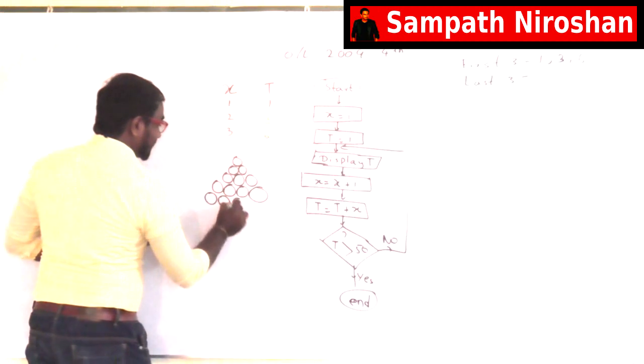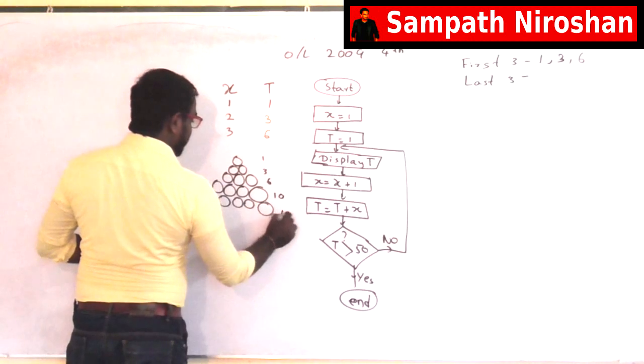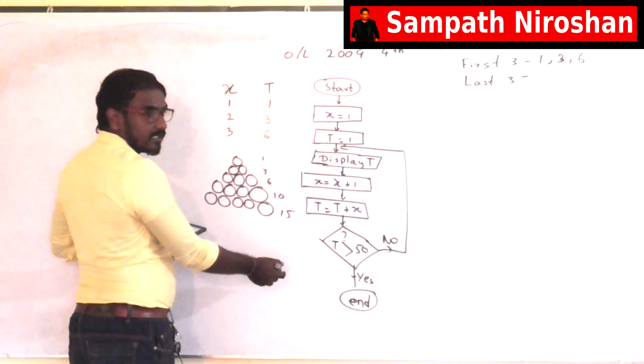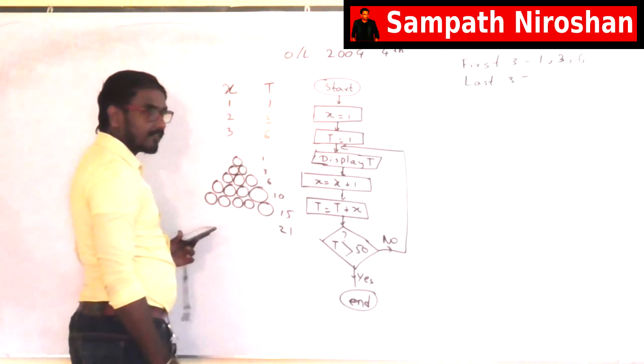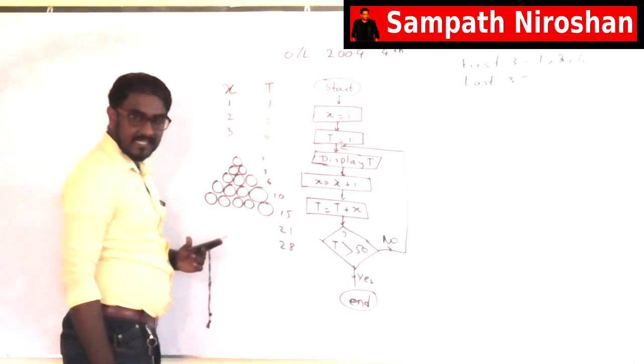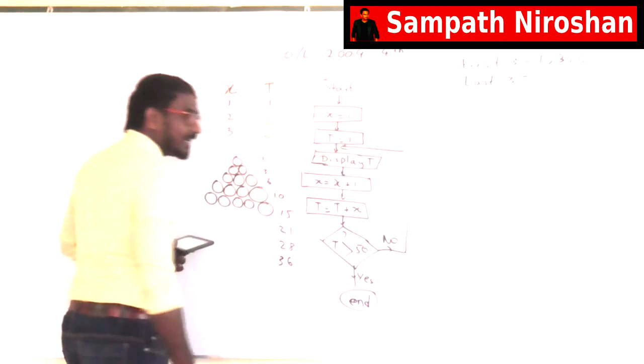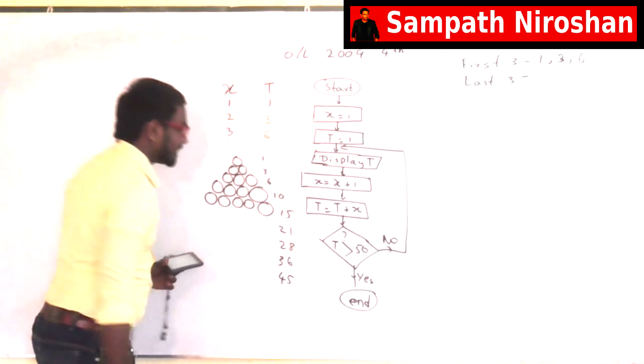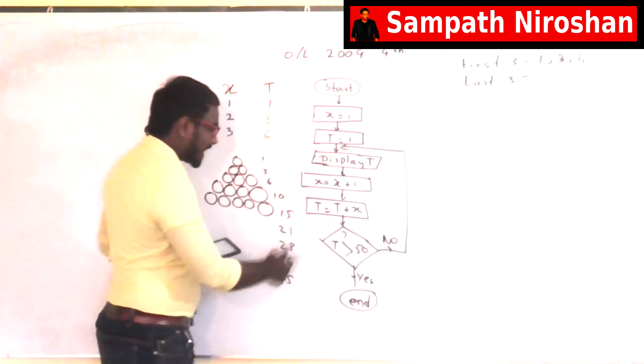So, that's 1, 2, 3, 4, 5. So here 1, here 3, here 6, here 10, this is 15. And it will be next 21, then 21 plus 7, that is 28. And 28 plus 8, 36. 36 plus 9, 45. 45 plus 10 is 55. That is more than 50. So there it stops.